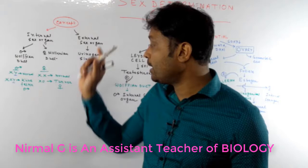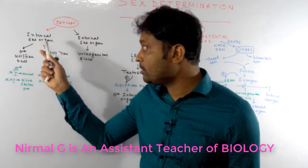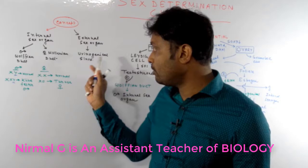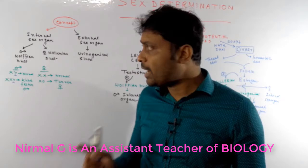The difference between male and female comes down to sex organs, which may be internal or external. The male internal sex organs are developed from the Wolffian duct, and the female internal sex organs are developed from the Müllerian duct. The external sex organs are developed from the urogenital sinus in both male and female.